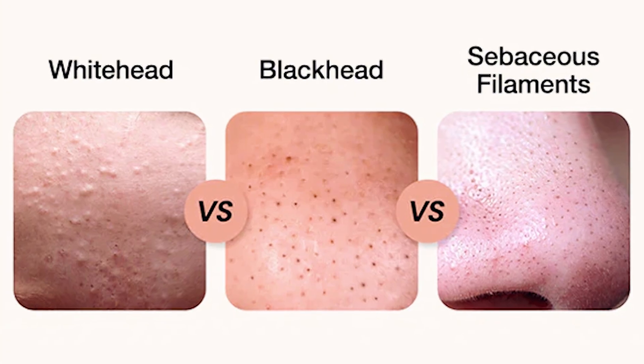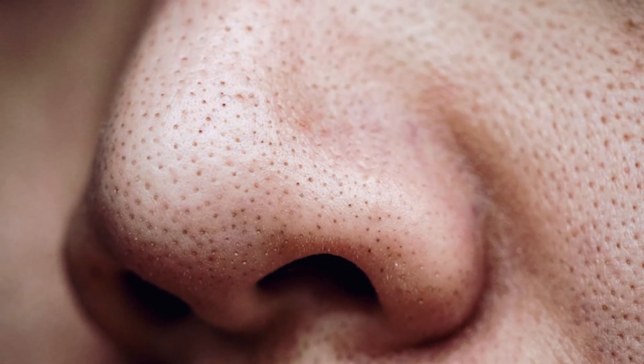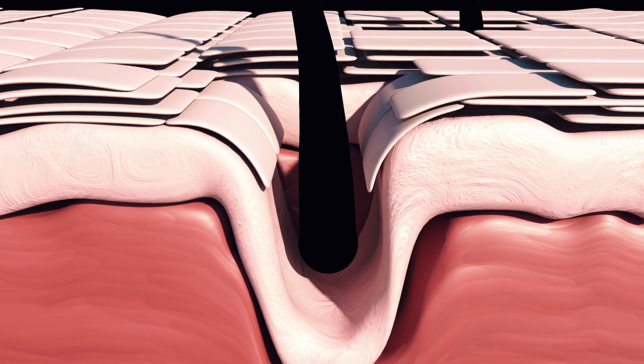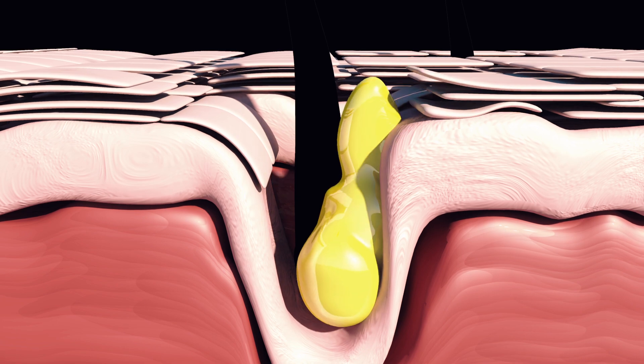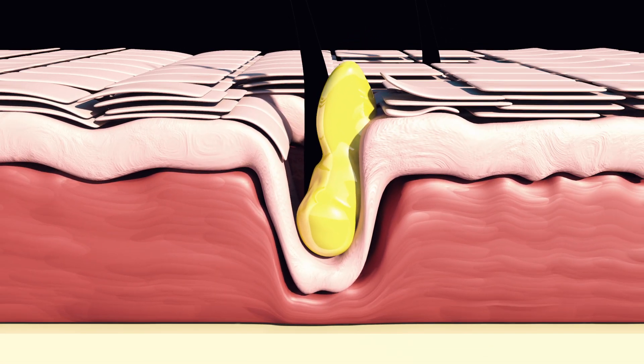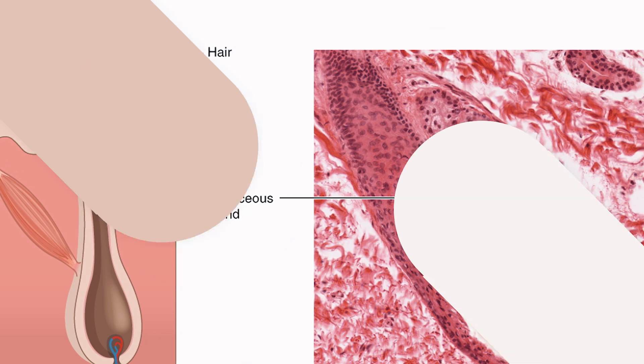Sebaceous filaments and blackheads are often confused because they can both appear as small dark spots on the skin, especially in areas like the nose. However, they are distinct in their structure and cause. In this video, we will help you understand the science behind both blackheads and sebaceous filaments so you know exactly what you are dealing with on your skin.